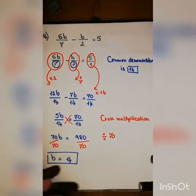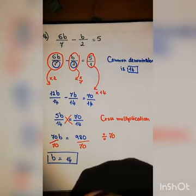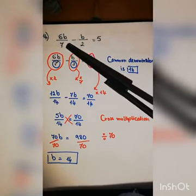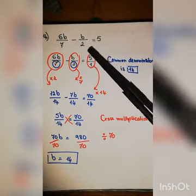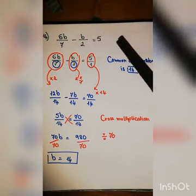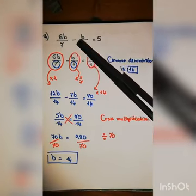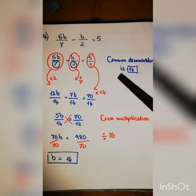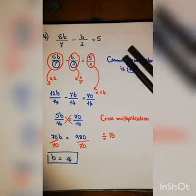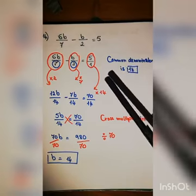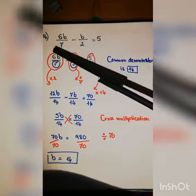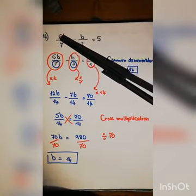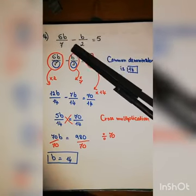Next example, number 14: six b over seven minus b over two equals five. The denominators are seven and two, so the common denominator is fourteen. To fix the first fraction to fourteen, multiply numerator and denominator by two.